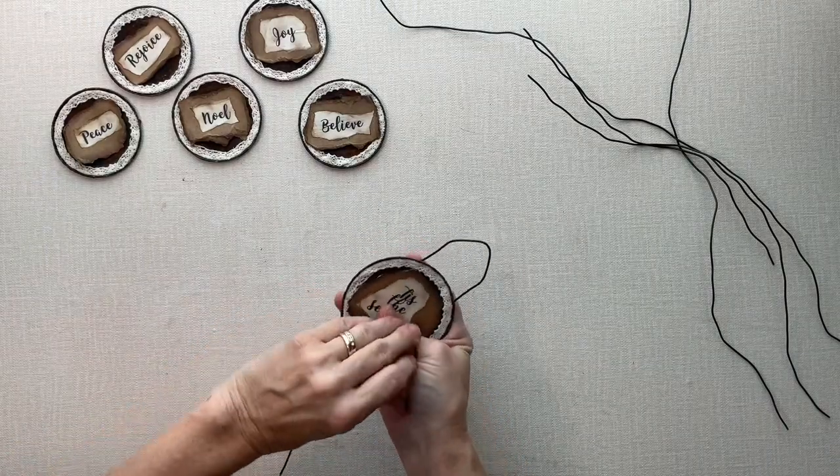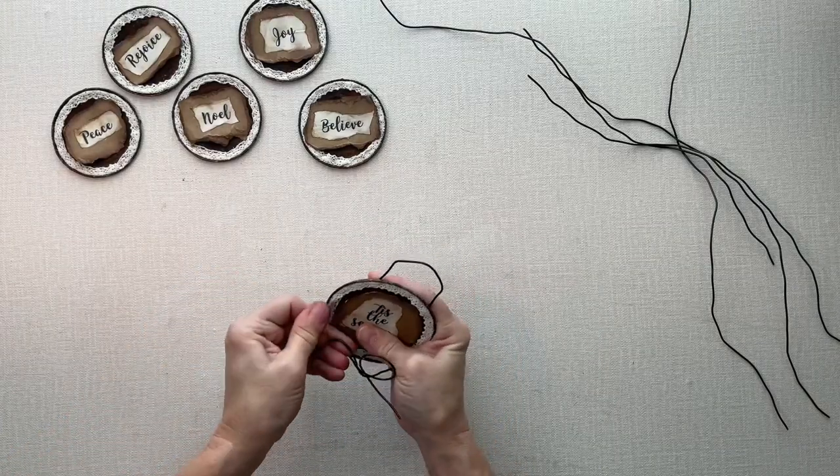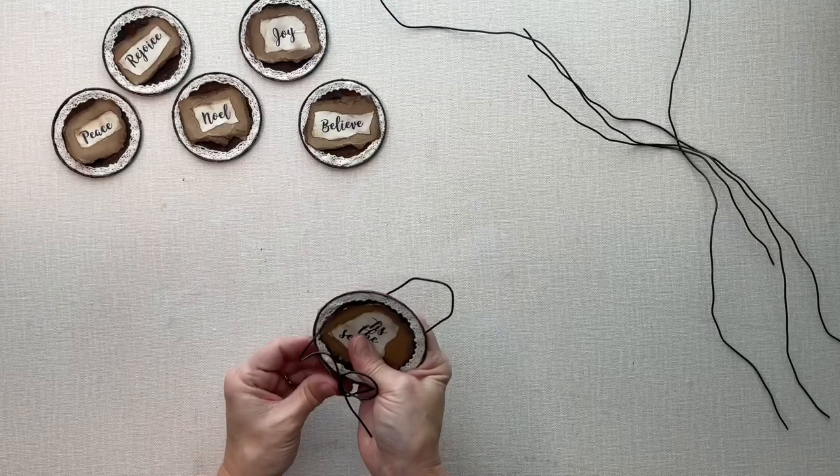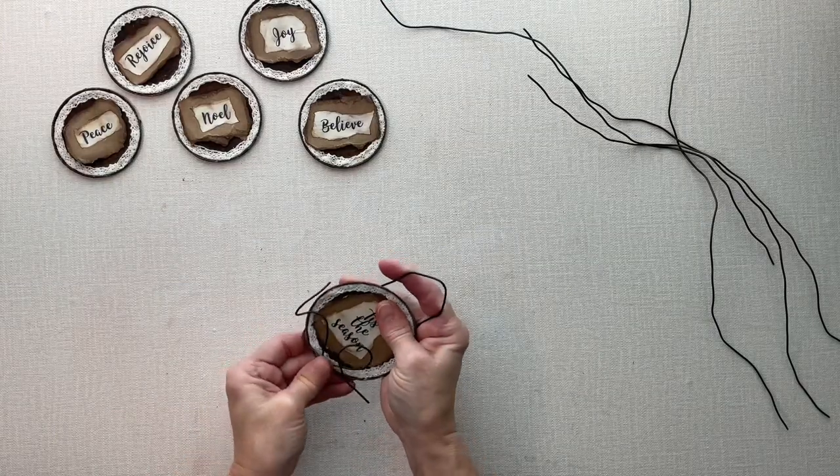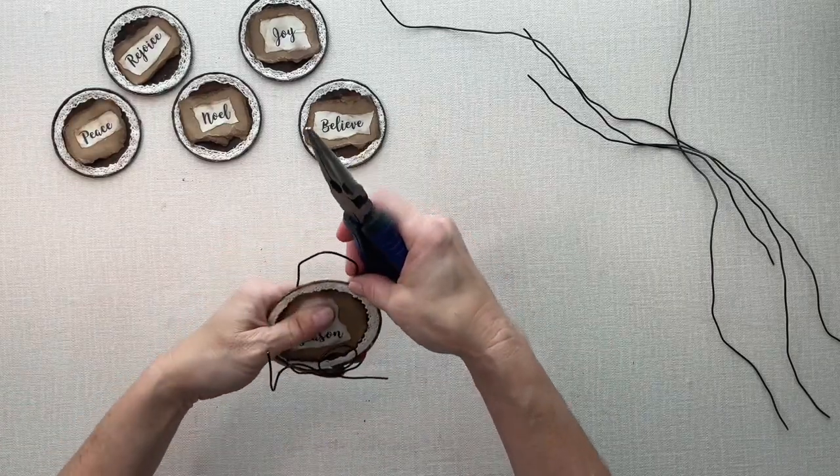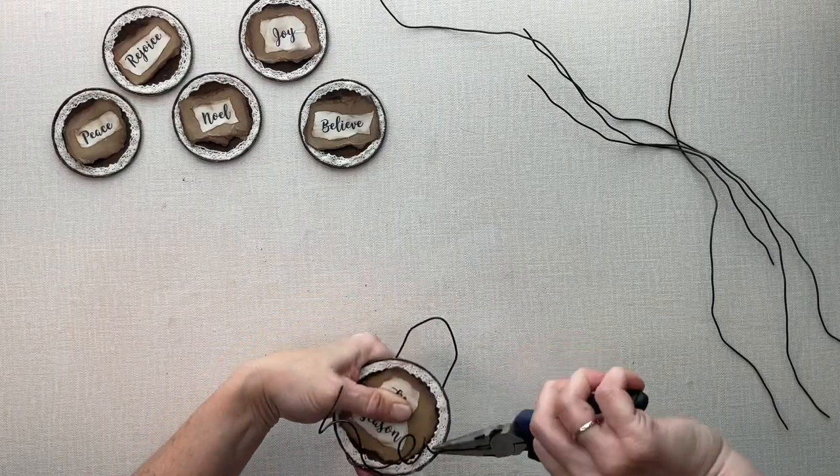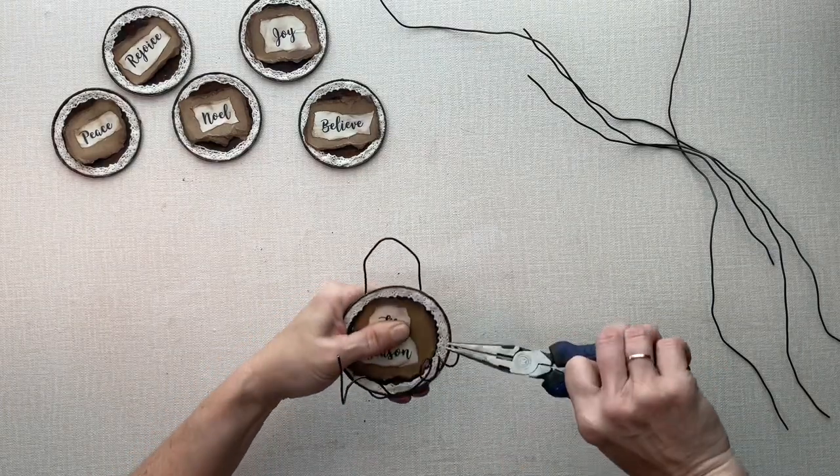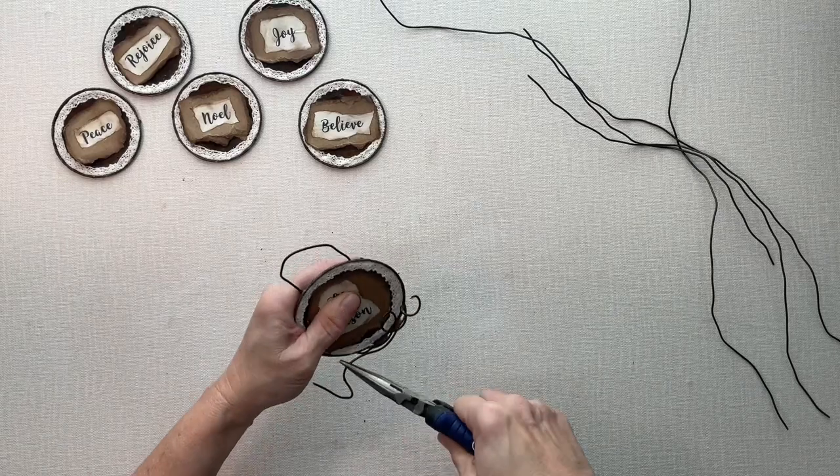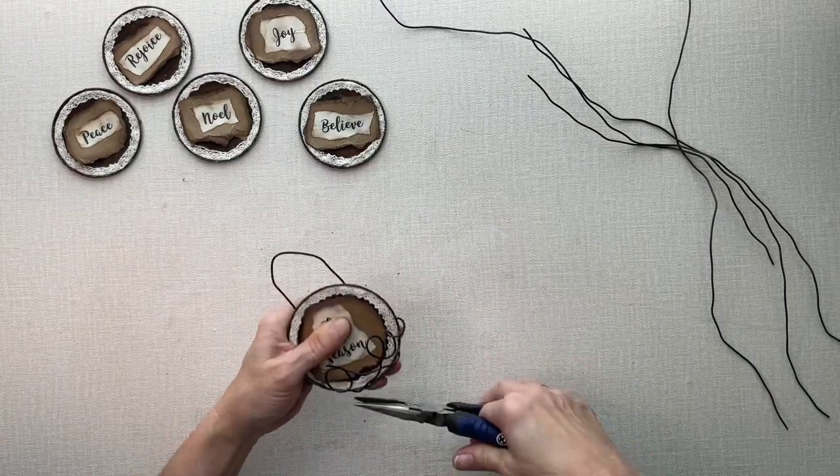It holds it on there, and then I'll be hot gluing on the back. With this wire right here, I'm using my pliers to make little curlicues and different designs with the wires.